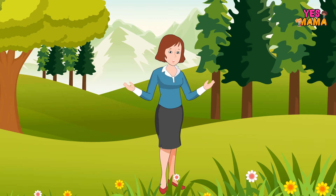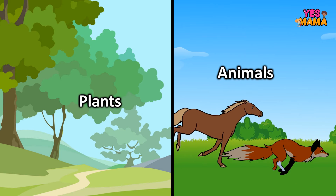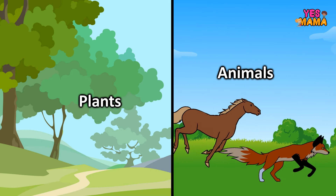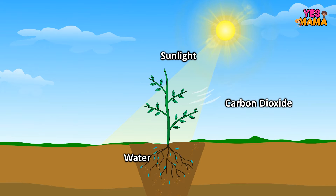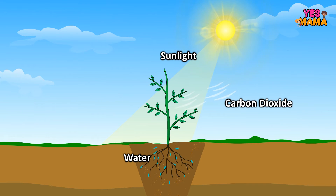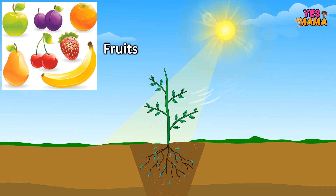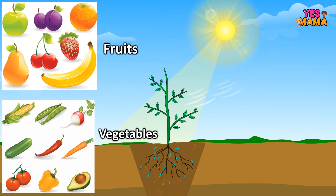How do we use these natural resources? All plants and animals use oxygen from air to breathe. Plants use sunlight, water from soil, and carbon dioxide from air to make their own food. We eat these plants, their fruits and vegetables.